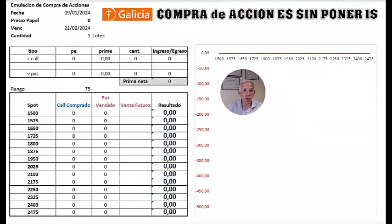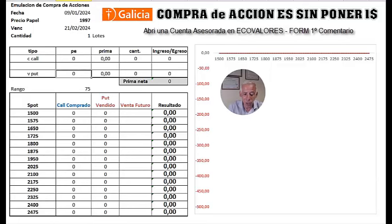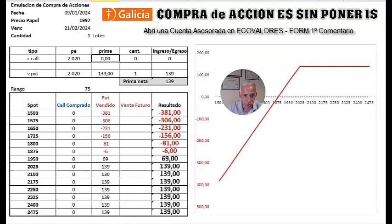Being in the calculator for the emulation of the stock purchase — which you can access from the first comment — we are going to load the operating values. The price of the paper closed at $1,997. Operating the base $2,020, financing the purchase of the call at $143 pesos, and selling a put at $139 pesos.